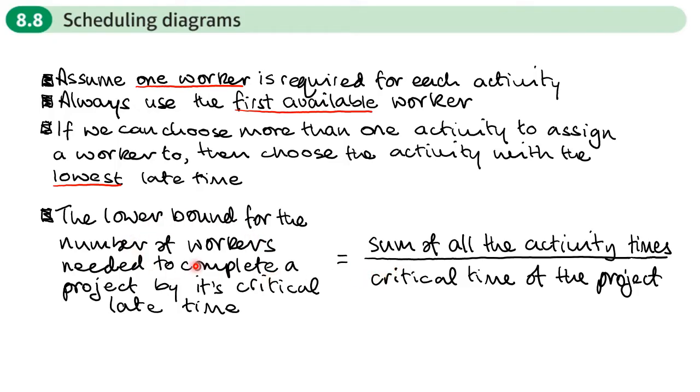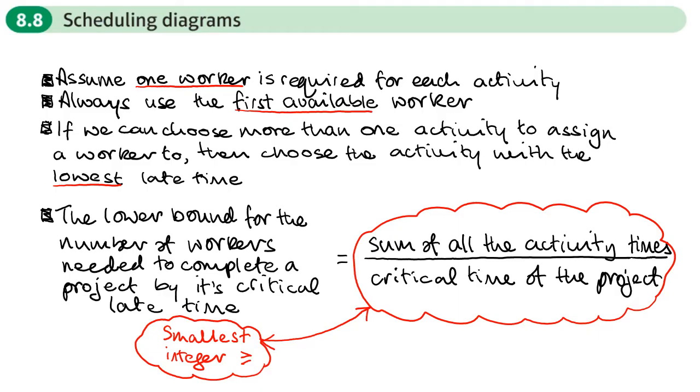The lower bound for the number of workers needed to complete a project by its critical late time is the sum of all the activity times divided by the critical time of the project. When we do this calculation, we may not necessarily get a whole number, but what we want is the smallest integer that's greater than or equal to this value.